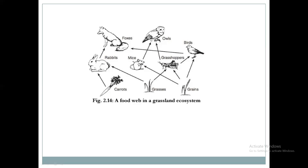This mouse is interconnected to all. Grasshopper is interconnected to all. Birds and grains are interconnected with the mouse and grasshopper. Grass is interconnected to rabbit and grasshopper. In this way it forms a web. It depends upon more than one organism, and this forms an interlinking arrangement — an interlinking system — which forms a food web.